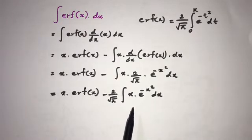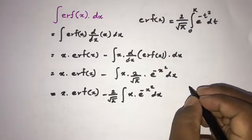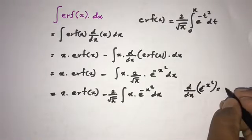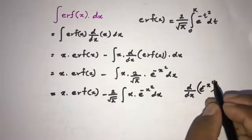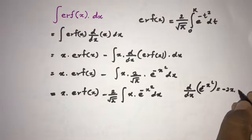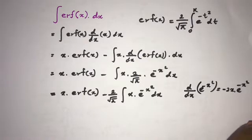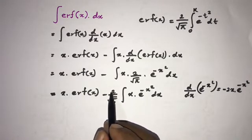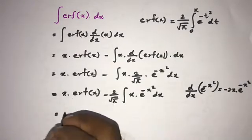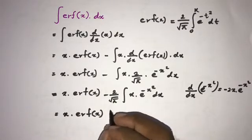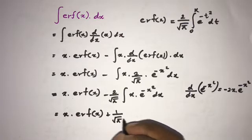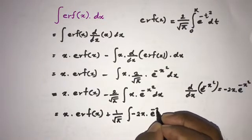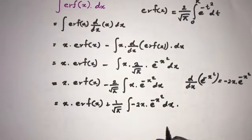To evaluate this integral, we use the fact that the derivative of e to the minus x squared, by the chain rule, equals minus 2x times e to the minus x squared. So x times e to the minus x squared rearranges with the factor of minus 2, giving us x times erf(x) plus 1 over square root of pi times the integral of minus 2x times e to the minus x squared dx.